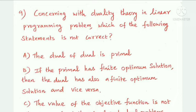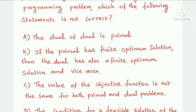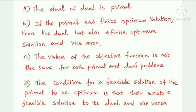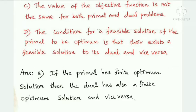Next question: concerning duality theory in a linear programming problem, which of the following statements is not correct? The dual of the dual is primal; if the primal has a finite optimum solution, then the dual also has a finite optimum solution and vice versa; the value of the objective function is not the same for both primal and dual problems; or the condition for a feasible solution of the primal to be optimum is that there exists a feasible solution to its dual. Option B is the answer: if the primal has a finite optimum solution, then the dual also has a finite optimum solution and vice versa.